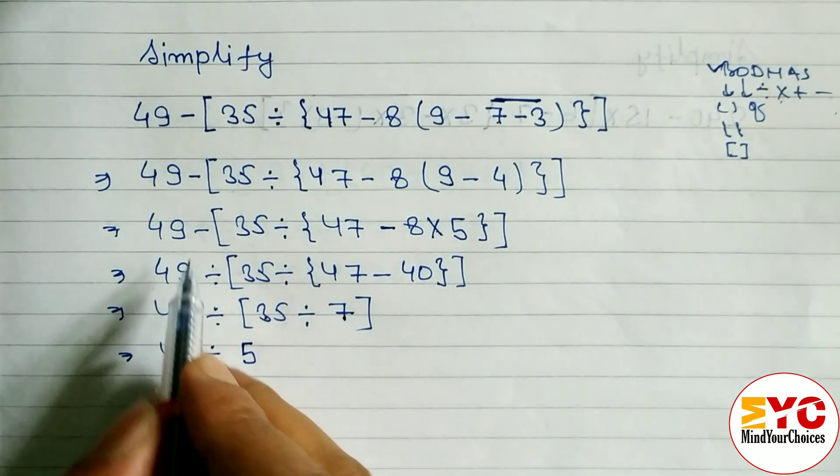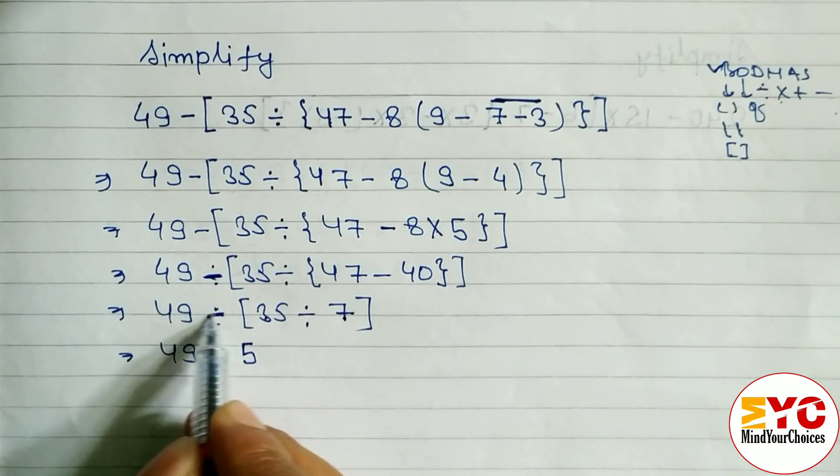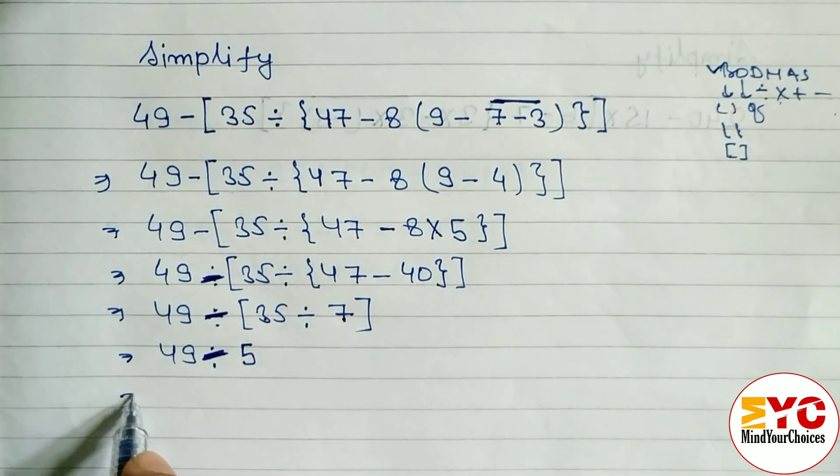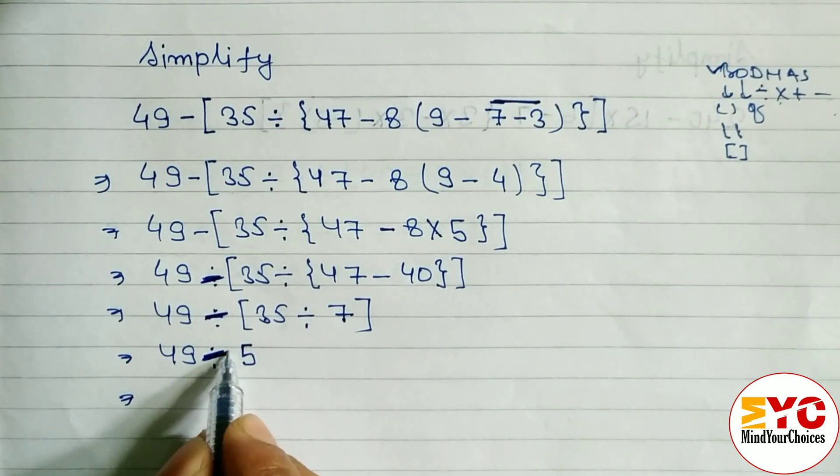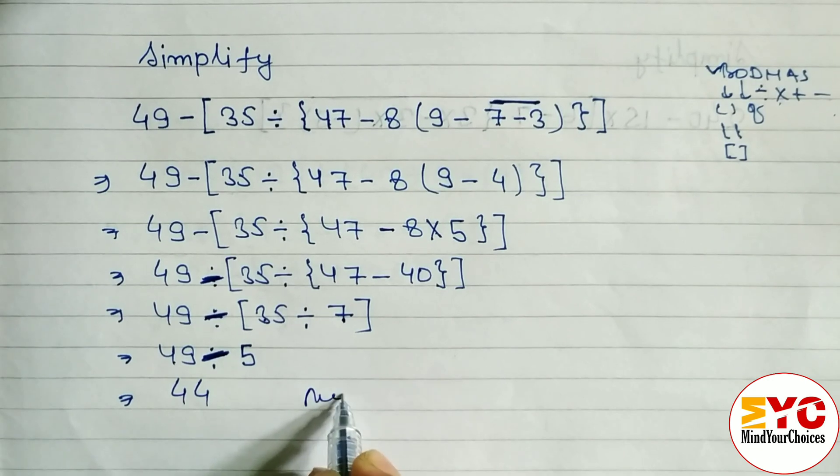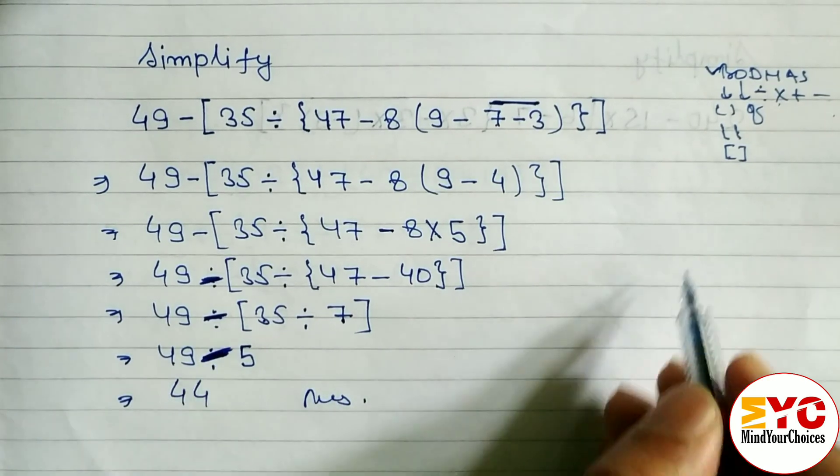Now 49 minus 5, we get here 44 is the answer. Hope you understand this video. You can also just write 49 divided by 5 and write it in mixed fraction, but here from first it is minus. Mistakenly I wrote divide, so it's minus.